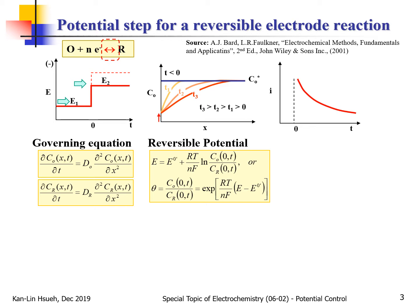This is the Nernst equation — E is considered for a reversible reaction at thermodynamic equilibrium, so the electrode potential is a function of the surface concentrations. We can rearrange the Nernst equation so that the concentration ratio CO divided by CR can be expressed as an exponential function of (nF/RT)(E minus E°'). E°' is the formal potential at thermodynamic equilibrium when both concentrations equal unity. The parameter theta can be regarded as a dimensionless potential — it is a function of E.